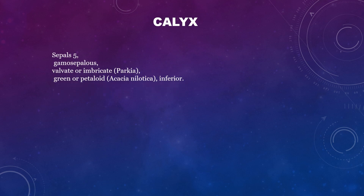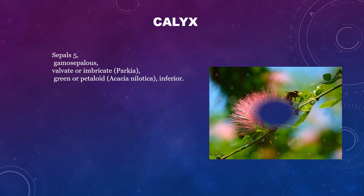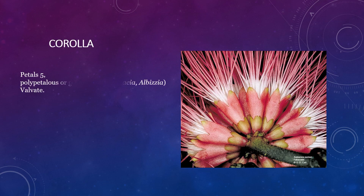Calyx consists of five sepals which are gamosepalous — that is, united or fused sepals — with valvate or imbricate aestivation, green or petaloid as in Acacia nilotica, and inferior in position. Corolla consists of five petals, polypetalous or gamopetalous — both conditions are present, like in Acacia and Albizia. The aestivation of the petals is valvate and the petals are inferior in position.